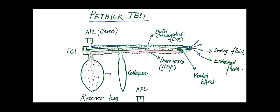That is why this reservoir bag collapses. The gases passing through the inner inspiratory tube act as the driving fluid, and the gases from the outer corrugated tube and the reservoir bag are the entrained fluid.